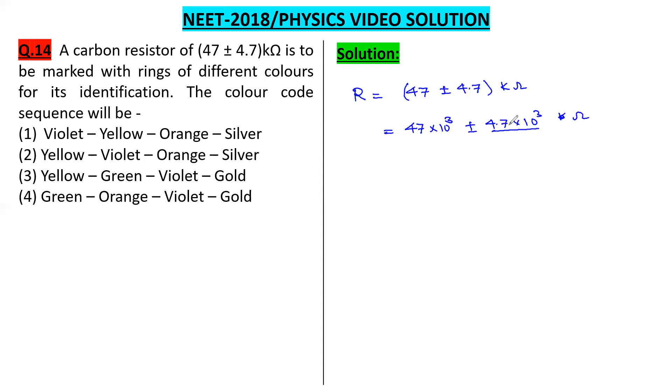So this is the tolerance. This is 10% of this whole thing. 4.7 is 10% of 47. So in terms of percentage I can write 47 into 10 to the power 3 plus minus 10%.